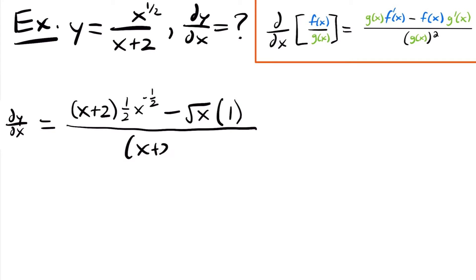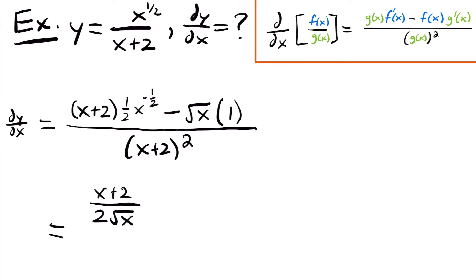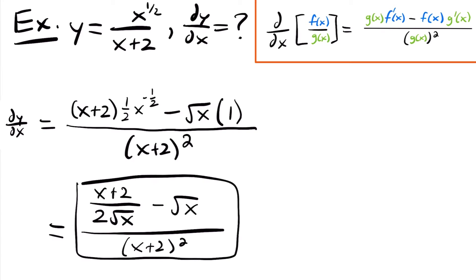This is all divided by the denominator squared, so we have x plus 2 squared. Simplifying by moving the negative exponent into the denominator, we get x plus 2 divided by 2 times the square root of x, minus the square root of x divided by x plus 2 squared. That is the derivative of our original function.